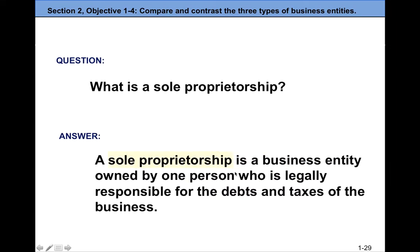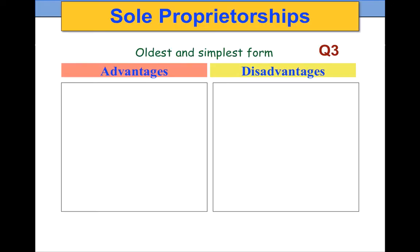A sole proprietorship is a business entity owned by one person, and that person is legally responsible for the debts and taxes of the business. Debt is another term — it refers to the claims of others against our assets. In accounting we call debts liabilities, and we use those two terms interchangeably. The sole proprietorship is the oldest and simplest form of business entity.